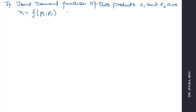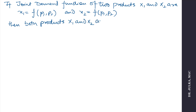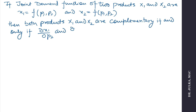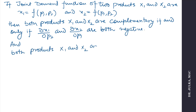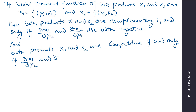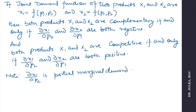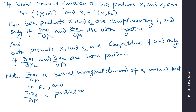If the joint demand function of two products X1 and X2 are X1 = f(P1, P2) and X2 = f(P1, P2), where P1 and P2 are the prices of X1 and X2, then both products are complementary if and only if ∂X1/∂P2 and ∂X2/∂P1 are both negative, and both products are competitive if and only if ∂X1/∂P2 and ∂X2/∂P1 are both positive. Remember that ∂X1/∂P2 is the partial marginal demand of X1 with respect to P2, and ∂X2/∂P1 is the partial marginal demand of X2 with respect to P1.